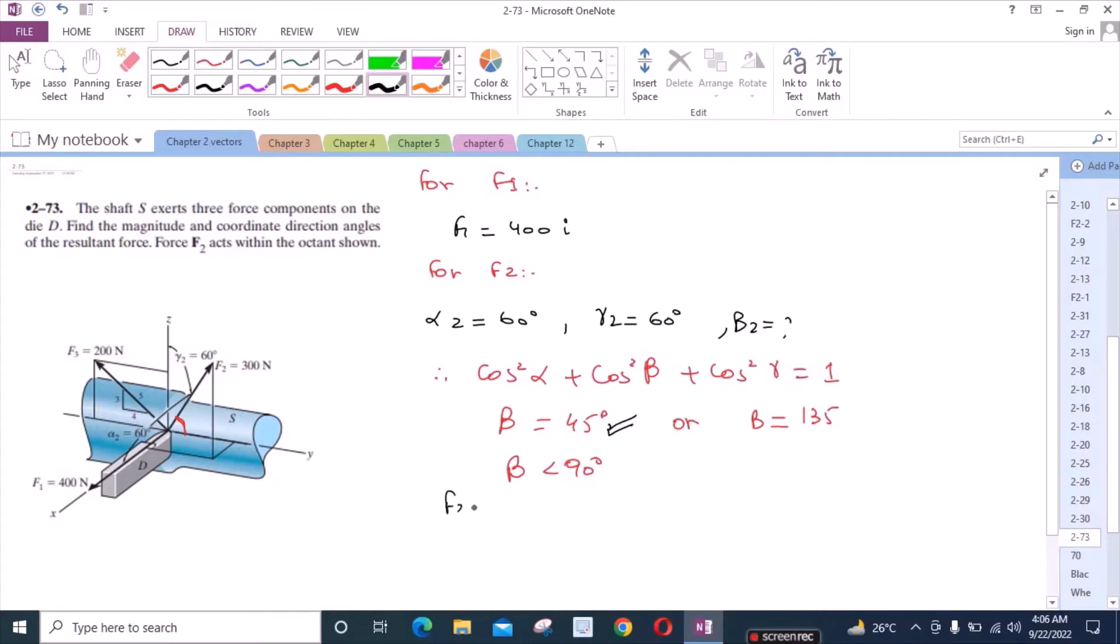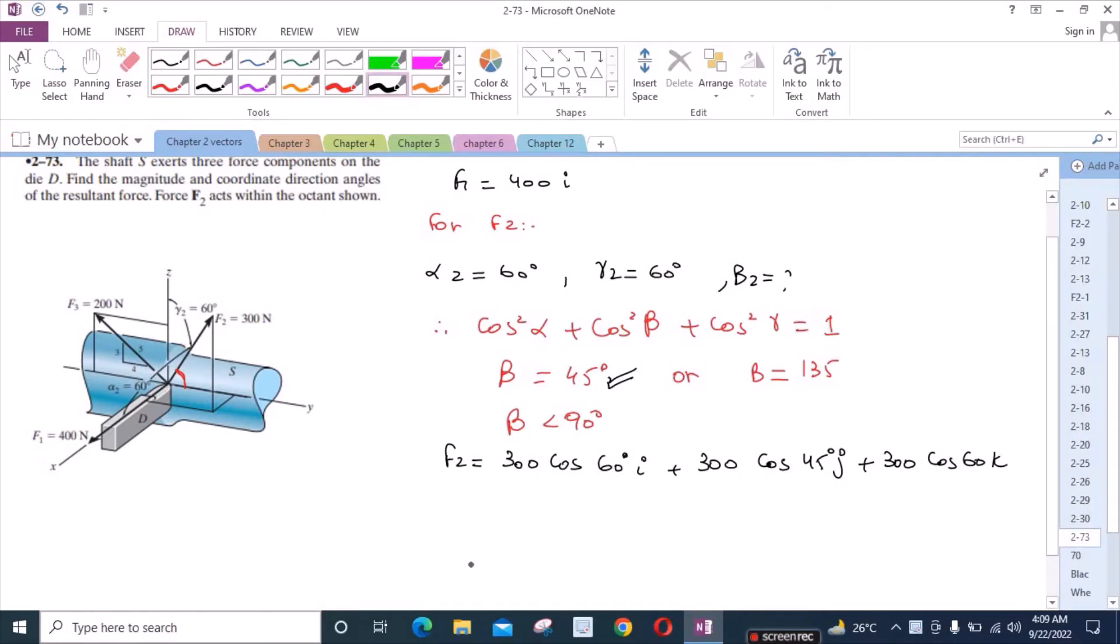So we can write F2 as: the magnitude is 300, 300 cos alpha which is 60 degrees i plus 300 cos beta which is 45 degrees j plus 300 cos 60k. F2 can also be written as F2 = 150i + 212.1j + 150k.